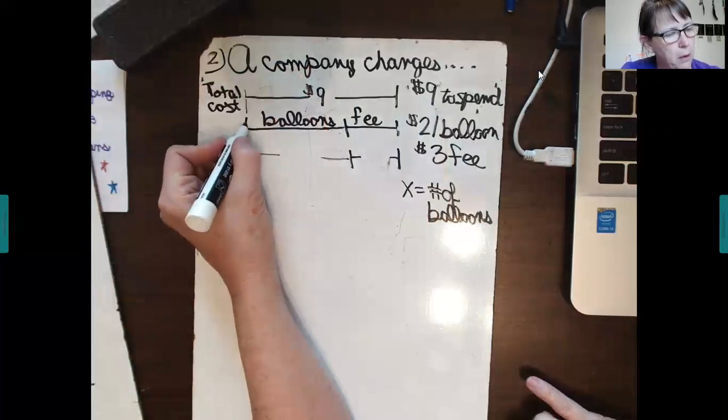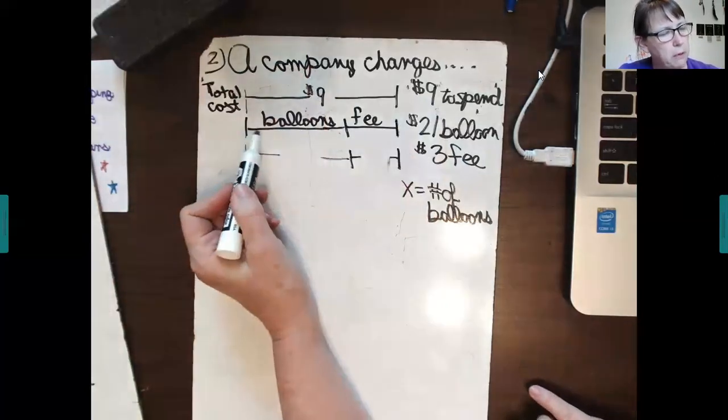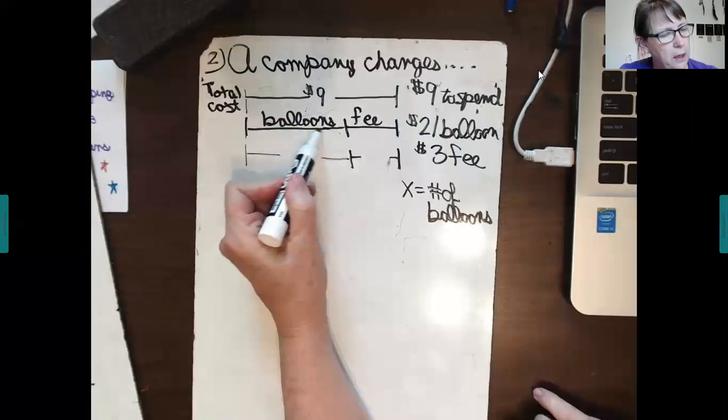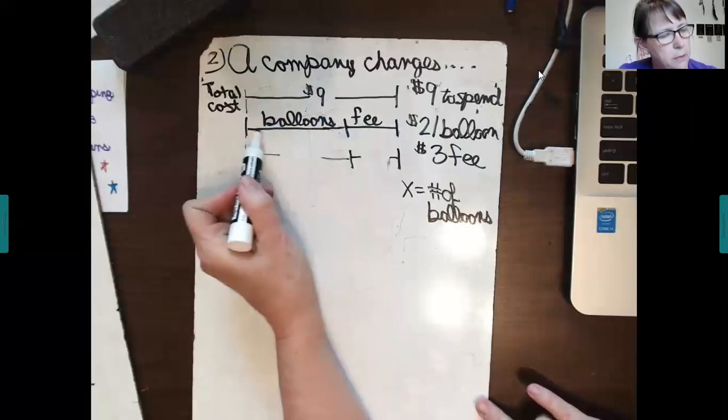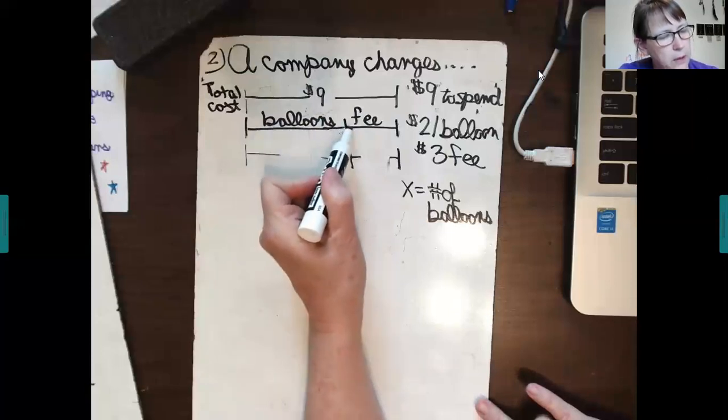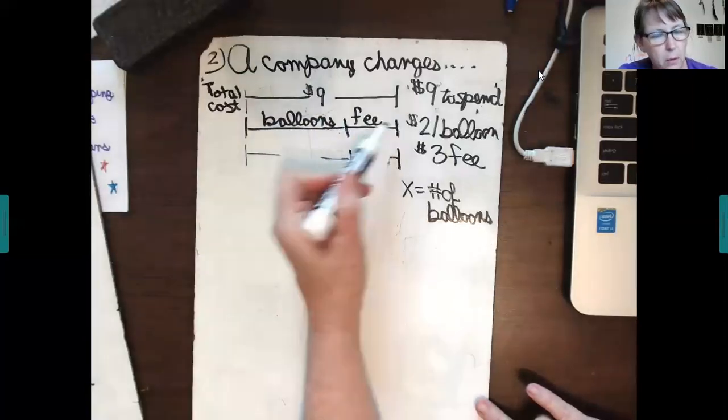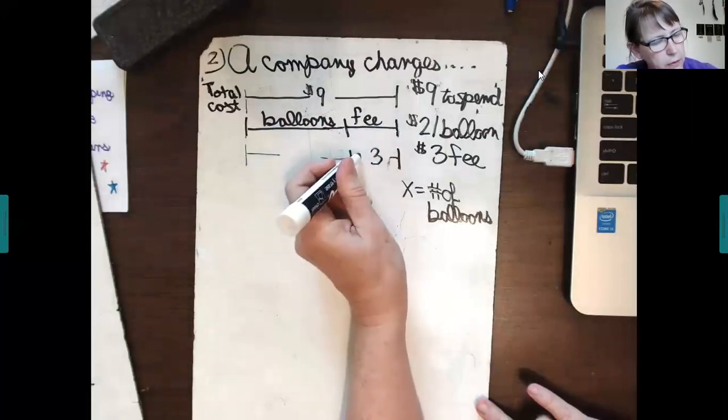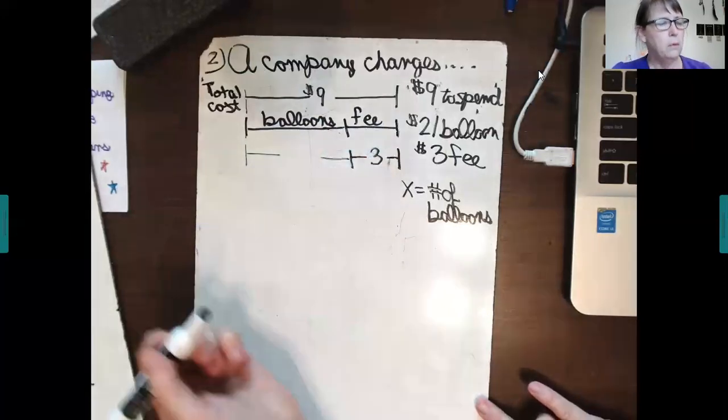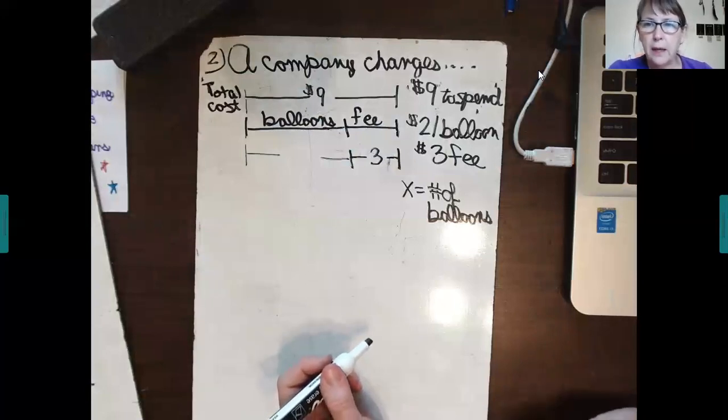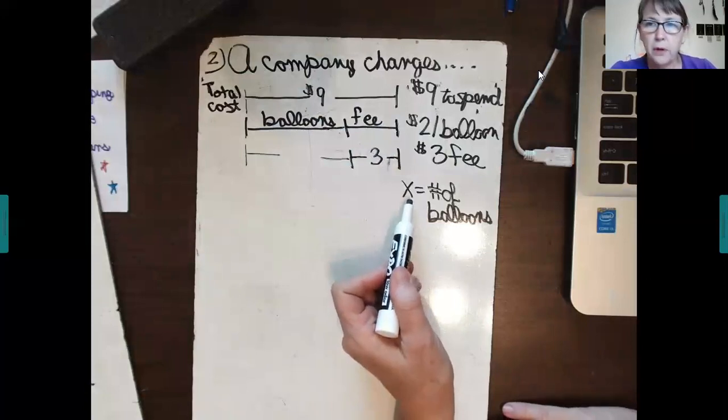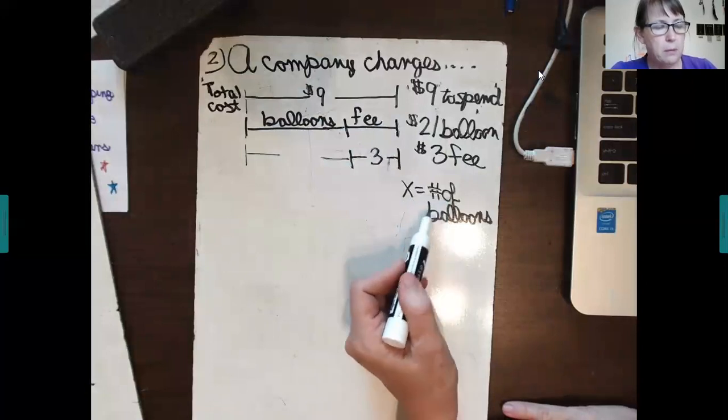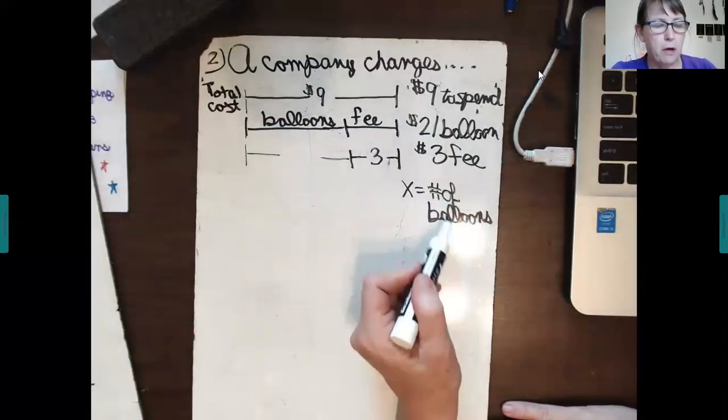And then, in this middle bar right here, I've broken it up. As you see already, I've assigned this to be balloons, and then this to be the fee, the cost of the balloons. This is the cost of the balloons, and this is the cost of the fee. Well, we already know the fee. It's a flat $3. What we don't know is how many balloons can they buy. So, I'm going to use the variable. The number of variables are unknown.